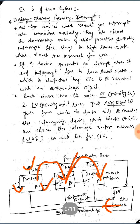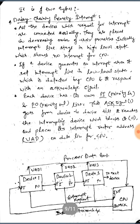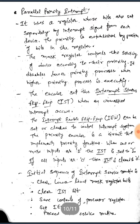The acknowledge signal goes from device to device until it reaches the interrupting device, which blocks it and places its interrupt vector address (VAD) on the data line. Whichever device generated the interrupt request will have its vector address placed on the processor data bus.